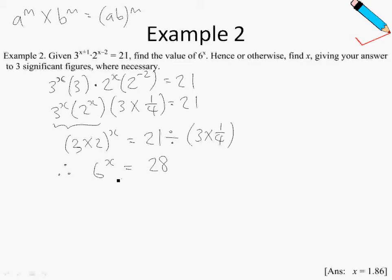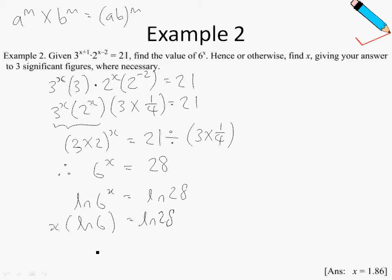So the value of 6^x is 28. Hence, to find x, we take ln on both sides: ln 6^x equals ln 28. x can be brought down to the front, and finally x is just ln 28 over ln 6. Rounding this off, you get 1.86 to 3 significant figures.